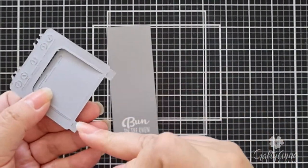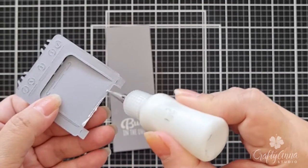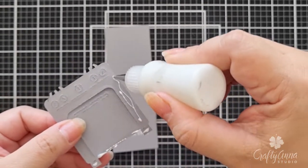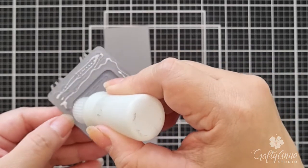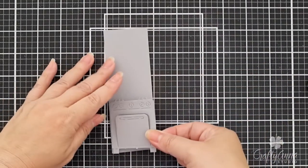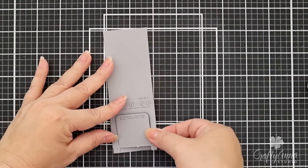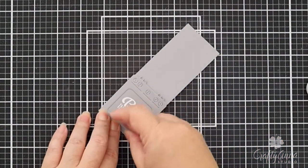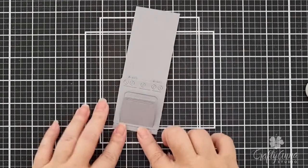At the back of the die cut oven, I will add a thin line of glue at the very bottom and all around, making sure I avoid the oven door area. I will lay it down on top of the heat embossed sentiment. Open up the door to make sure it didn't stick, then trim off the top.